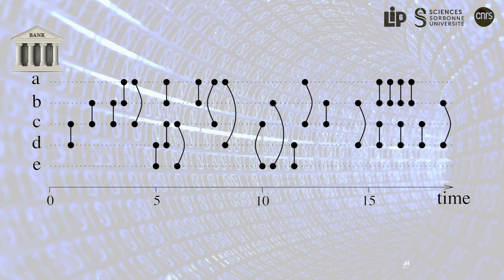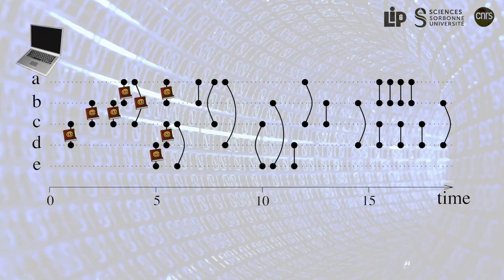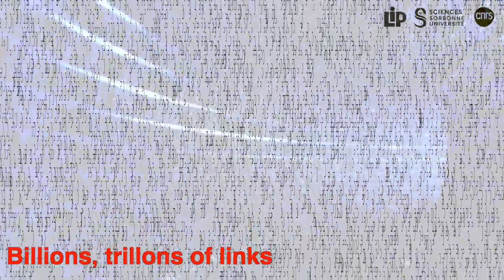Nodes may represent bank accounts linked by money transfers, or computers linked by data exchanges. The challenge is then to spot traces of illicit activities in huge link streams of these kinds.